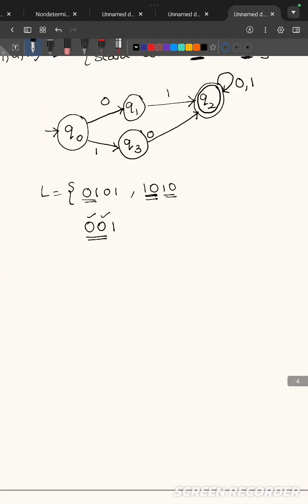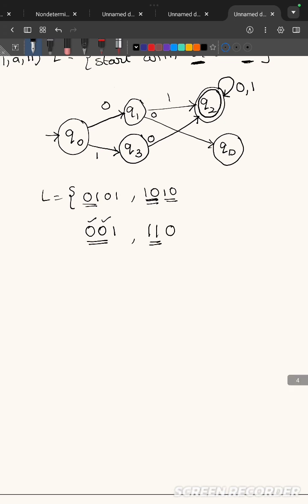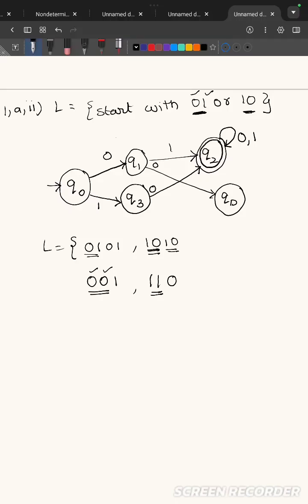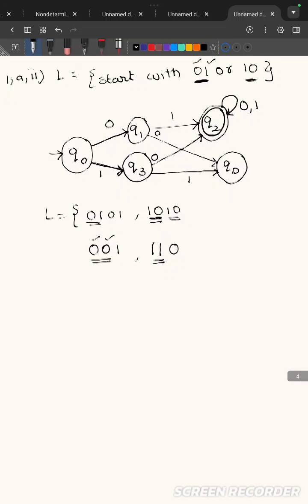Similarly, if the string is starting with 11, those strings also will not be accepted by my DFA. So on seeing the first 1, I will be in q3. On seeing the second 1, I will move to the dead state qd. So this is my final DFA.